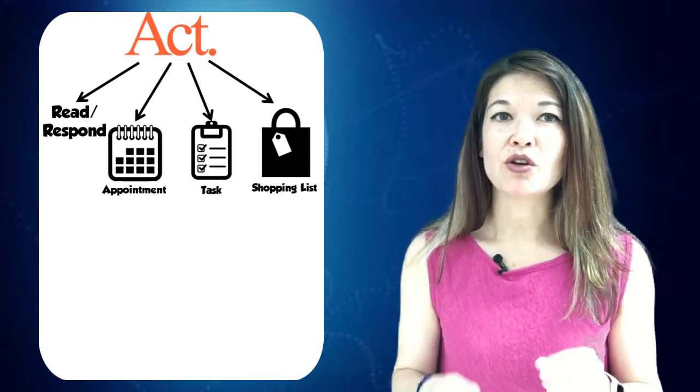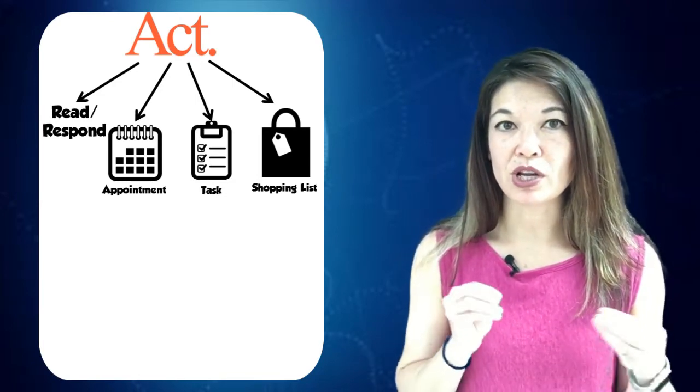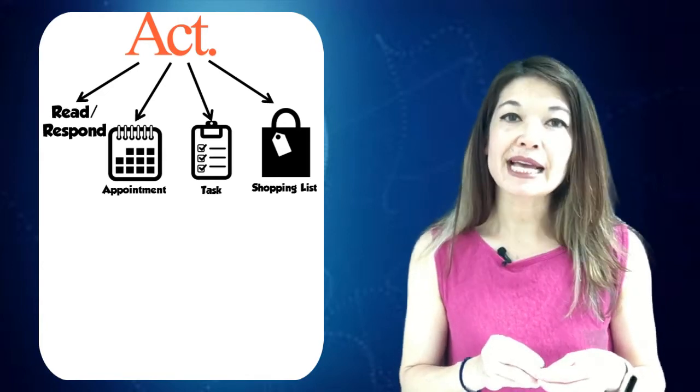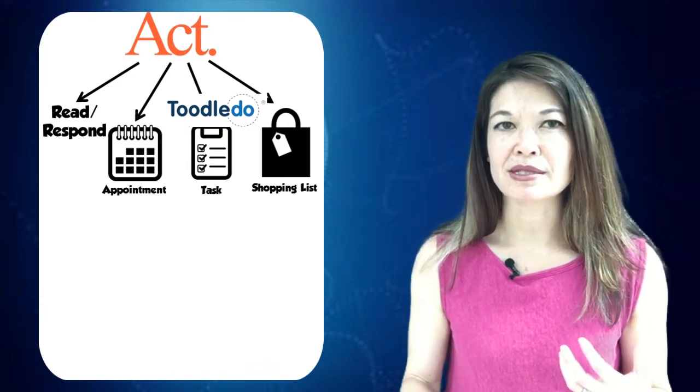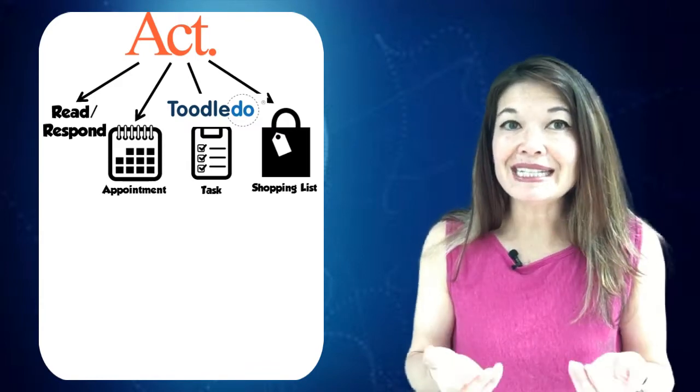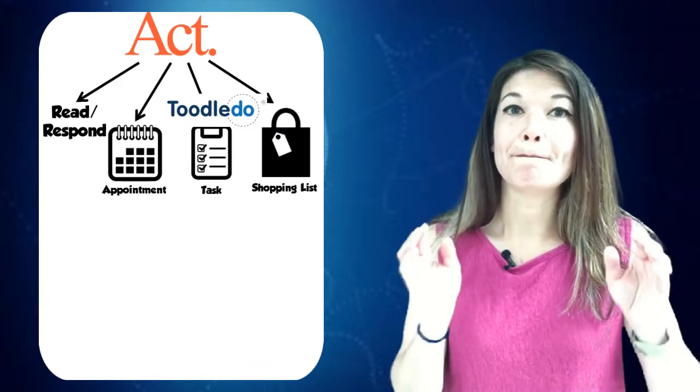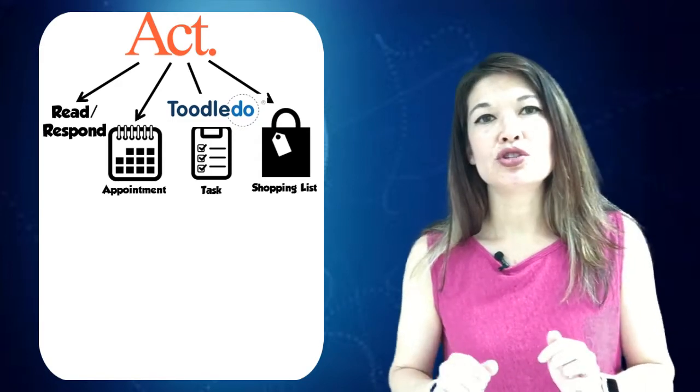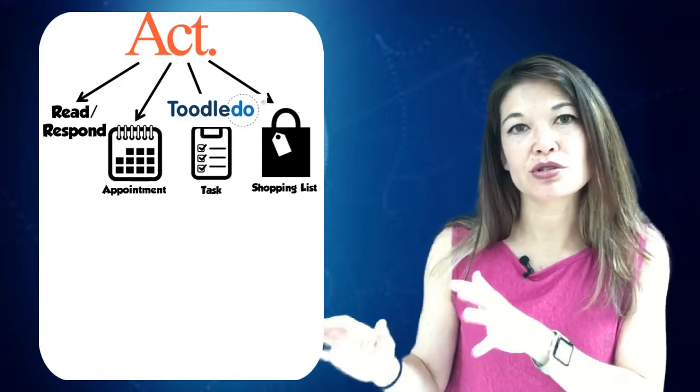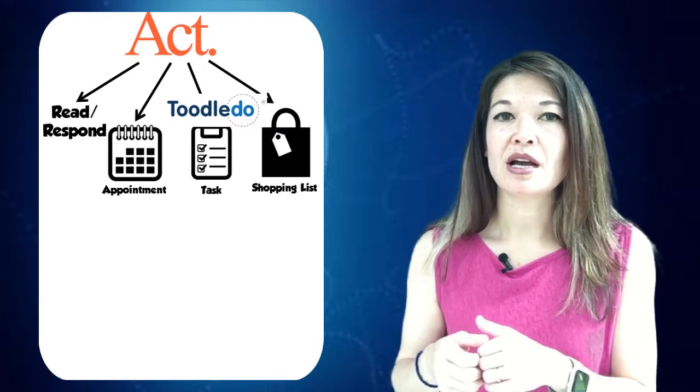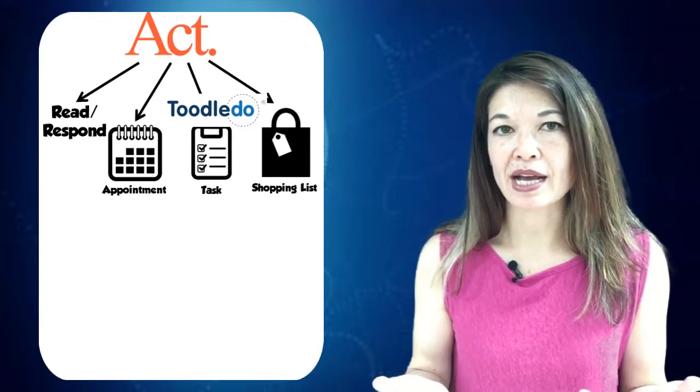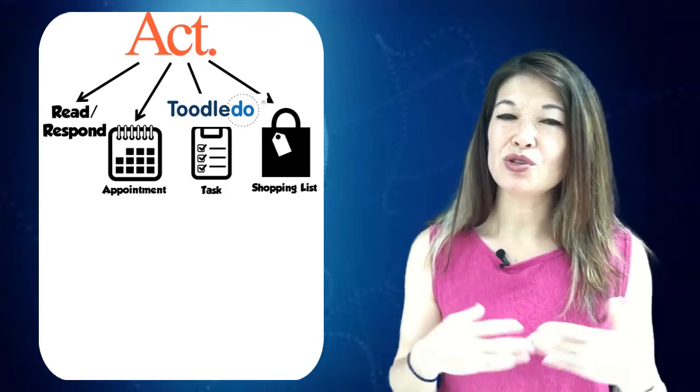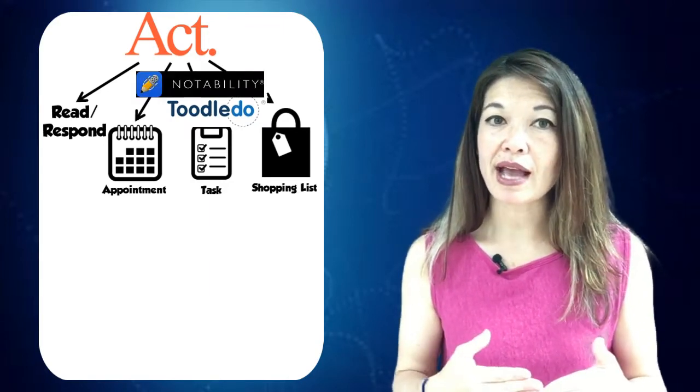For task list, I use Toodledoo, which is a dumb name but it's a nice robust app. I needed a task app that could book tasks in the future, show me only the tasks that are due today or overdue, create recurring tasks, and set categories or tags per task. I also use Notability, which is a handwriting app, to help me organize my Toodledoo tasks for the day.